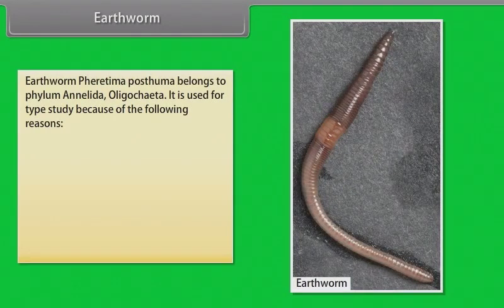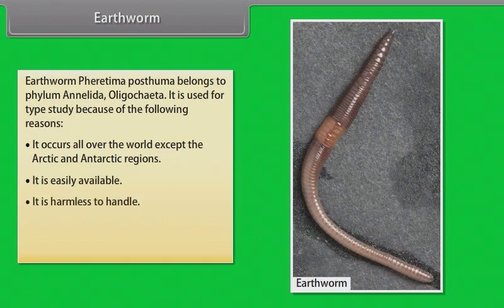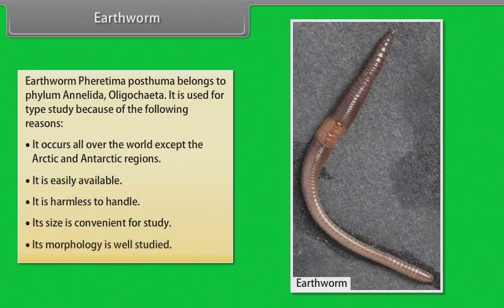Earthworm — Ferritima posthuma — belongs to phylum Annelida, Oligochaeta. It is used for type study because: it occurs all over the world except the Arctic and Antarctic regions, it is easily available, it is harmless to handle, its size is convenient for study, and its morphology is well studied.